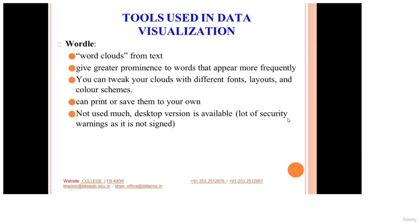The next tool is Wordle, which is nothing but a word cloud. It takes text as input and whichever words appear more frequently, it gives them greater prominence — representing them in a bigger font, different layout, or different color so we understand which word appears more frequently. The advantage of using Wordle is you can print or save the word clouds. Only the desktop version is available because there are some security warnings as it is not a signed version.